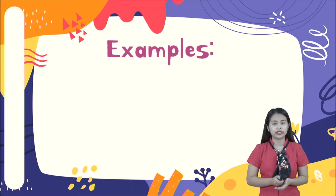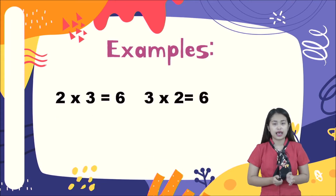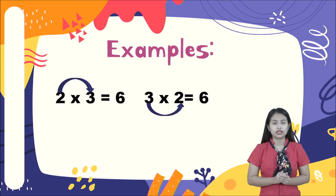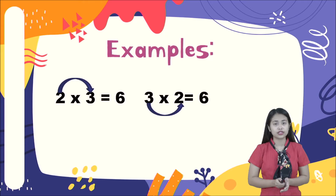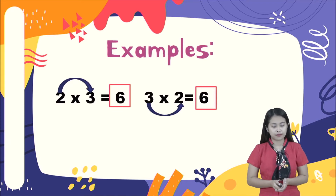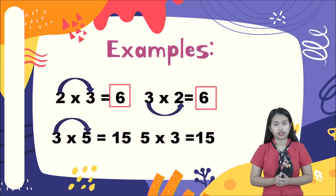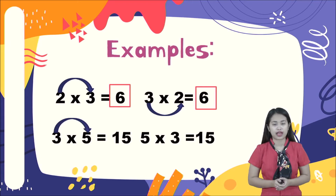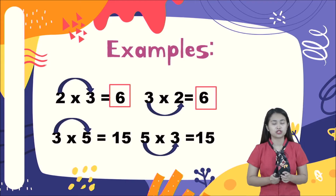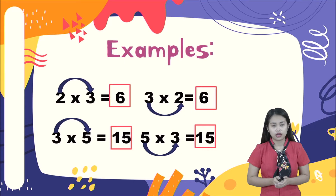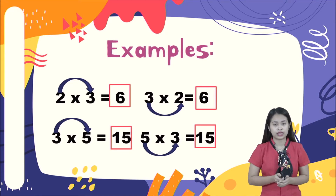Let us have some examples. Two times three equals six, and three times two equals six. Even though the factors have different places, the products are just the same — that is the commutative property. Another example: three times five equals fifteen, and five times three equals fifteen. Even though the factors change positions, they still have the same product, which is fifteen. That is the commutative property of multiplication.